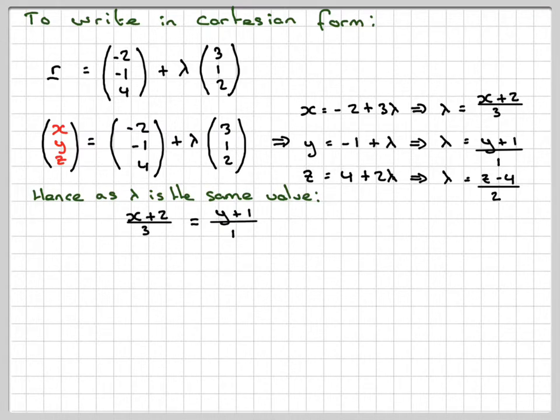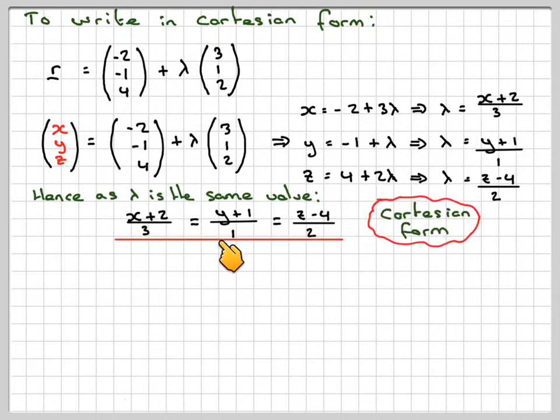Since lambda is the same value in all three cases, we can now say that (X + 2)/3 = (Y + 1)/1 = (Z - 4)/2. And that is called the Cartesian equation, or Cartesian form. We'll have a look at some other types in a minute.